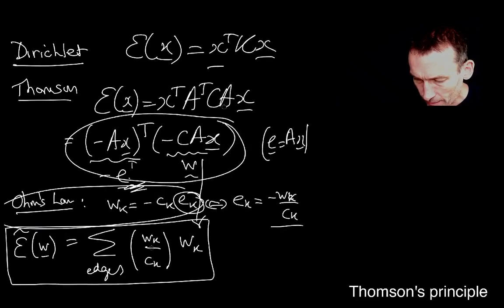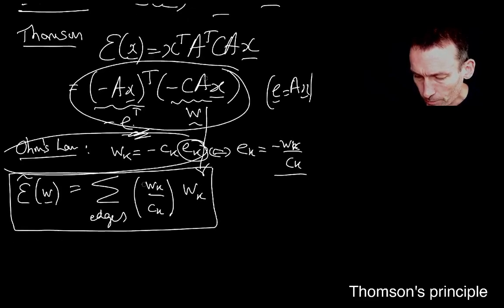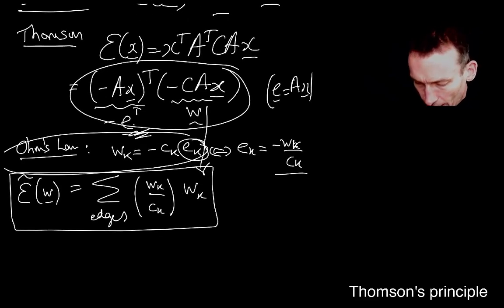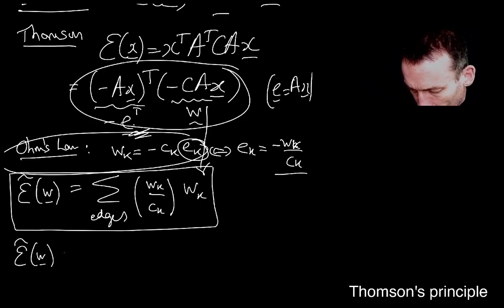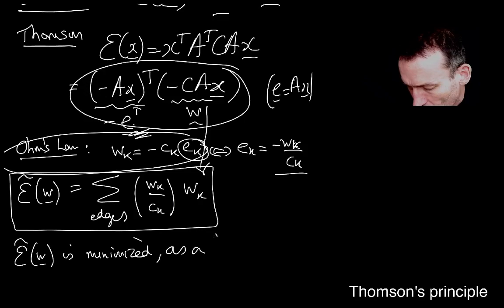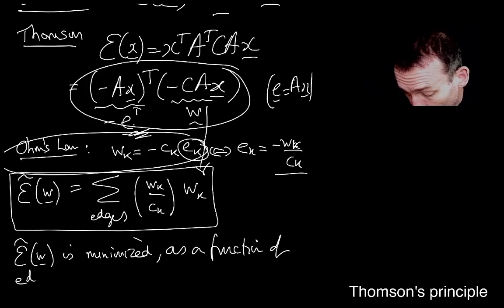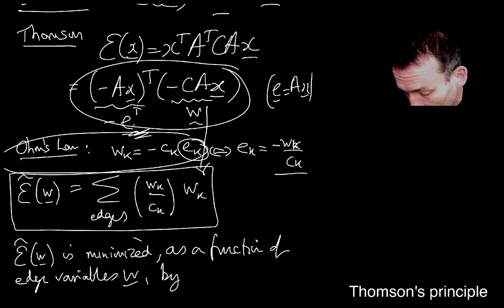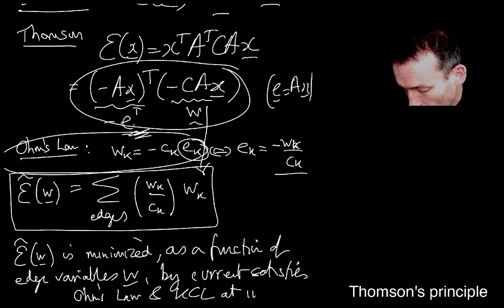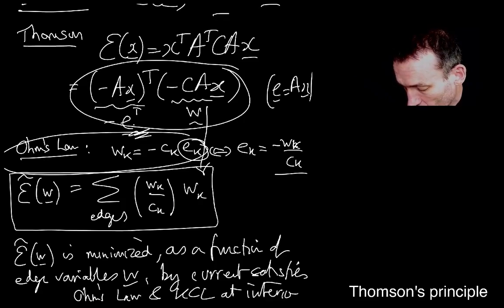And what Thomson said was, epsilon W is minimized as a function of the edge variables by the current that satisfies Ohm's law and Kirchhoff current law at the interior nodes.